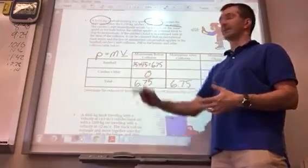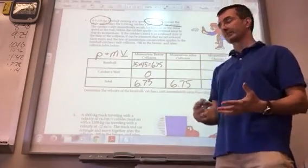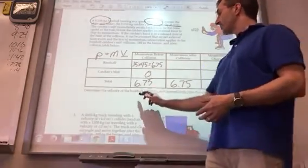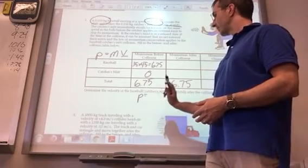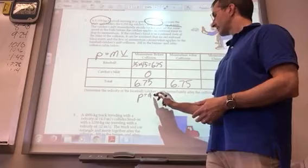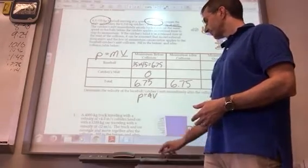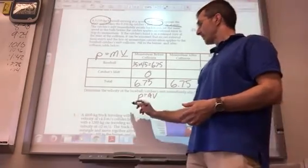We also want to know the momentum of the individual pieces, the baseball and the catcher's mitt, right after they collide. In order to do that we need to know what the velocity is. We don't know right at this moment what it is.